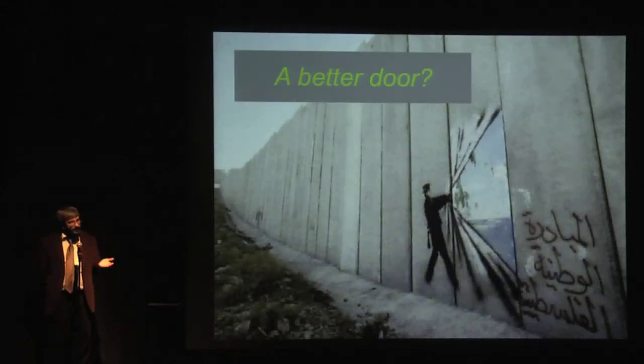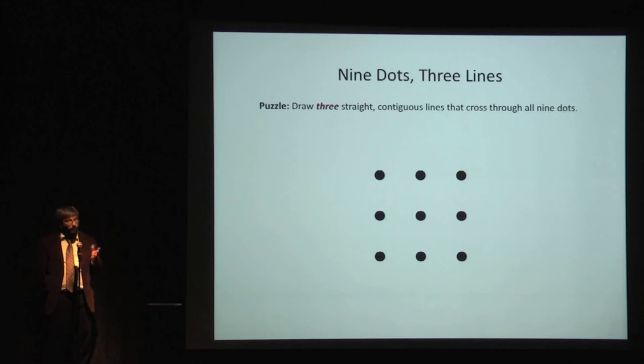And an example of this is if somebody asks you for a better door, you're going to start with a slab of material with a handle on it. But what if what they really wanted was a better way to get through a wall? So you have to examine the statement that's made. Well, we're going to try another puzzle here.